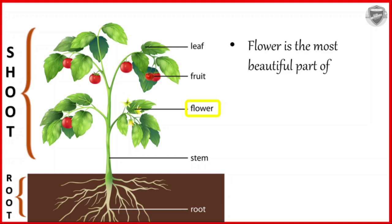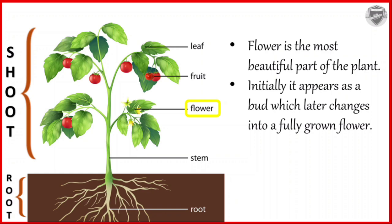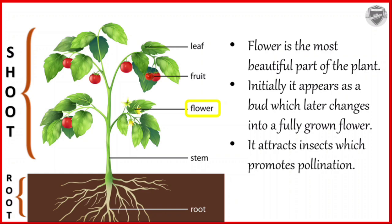Next is flower. Flower is the most beautiful part of the plant. Initially, it appears as a bud which later changes into a fully grown flower. It attracts insects which promotes pollination.